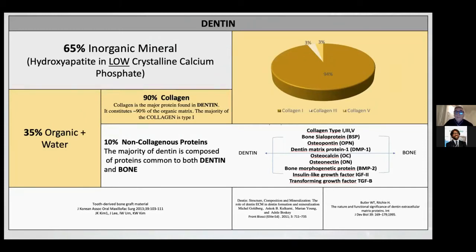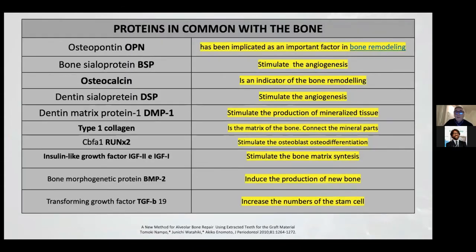The proteins in common with bone create everything we want for a GBR. For example, they stimulate the angiogenesis, stimulate the production of mineralized tissue, stimulate the osteoblast differentiation, and increase the numbers of stem cells.